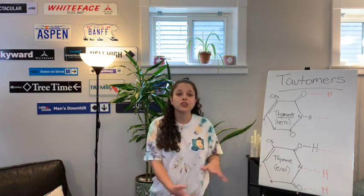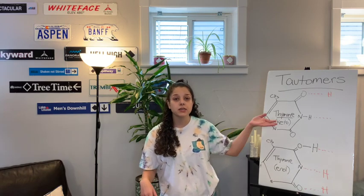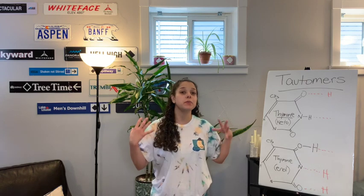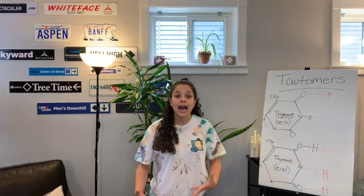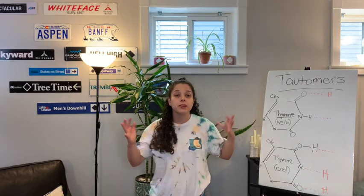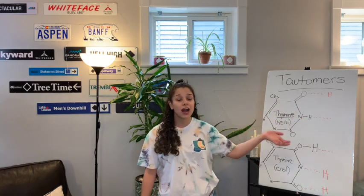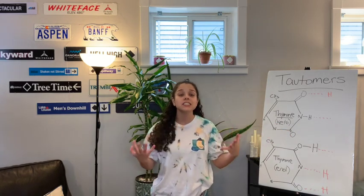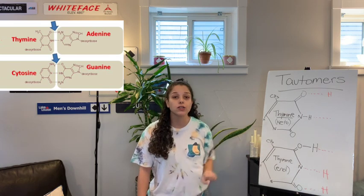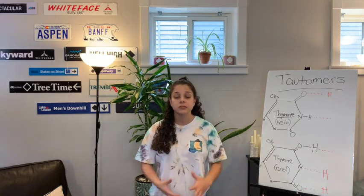This tautomeric shift poses a mutation risk because the cell doesn't see it as a mismatch or damage. Normally, if a thymine in its keto form tried to base pair with guanine, there would be a distortion in the backbone because of the incorrect number of hydrogen bonds. But because the thymine has transitioned into its enol form, it also wants three hydrogen bonds, so when it pairs with guanine there is no backbone distortion and it is not detected by the cell.